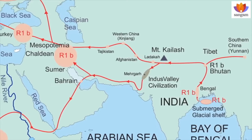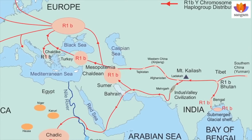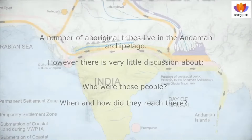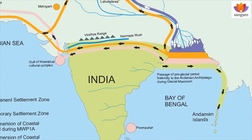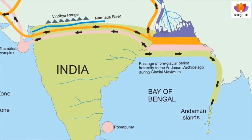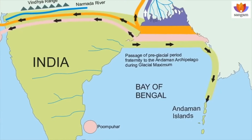This would also justify the spread of Indian languages and culture to distant lands. A number of Aboriginal tribes lived in the Andaman Archipelago. However, there is very little discussion about who these people were, when and how did they reach there. The only probable explanation is that they walked into the Andaman archipelago from the Bengal-Myanmar coast when a land bridge formed.